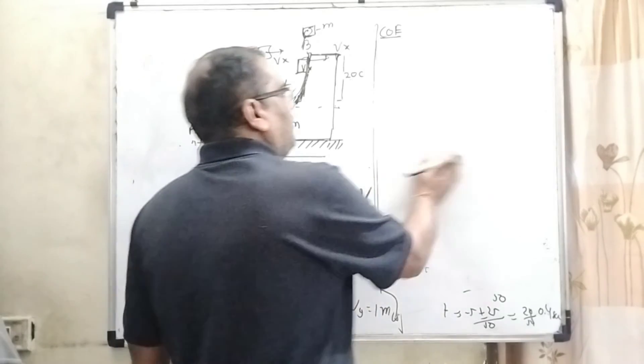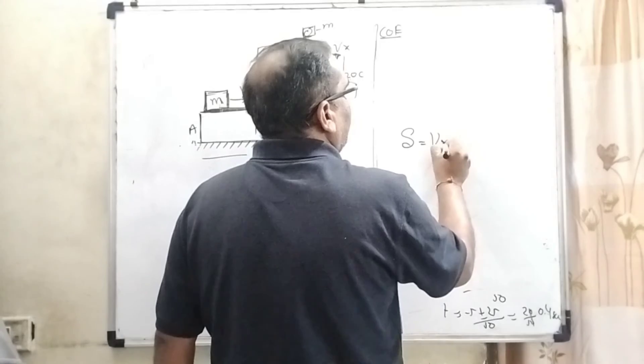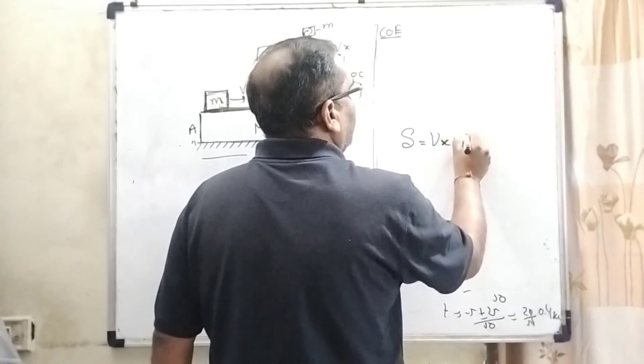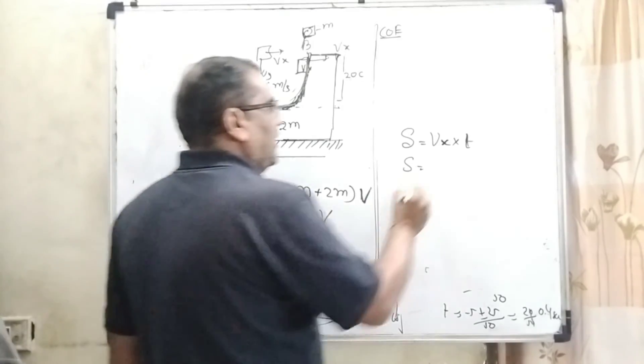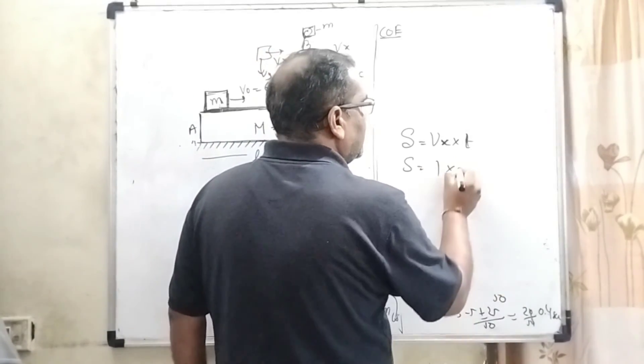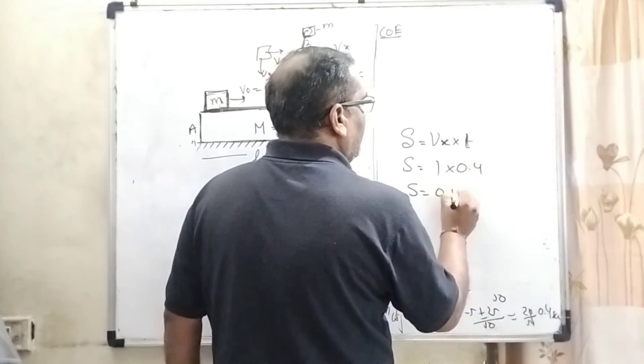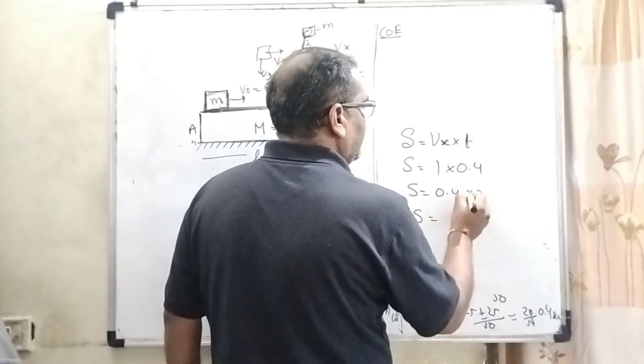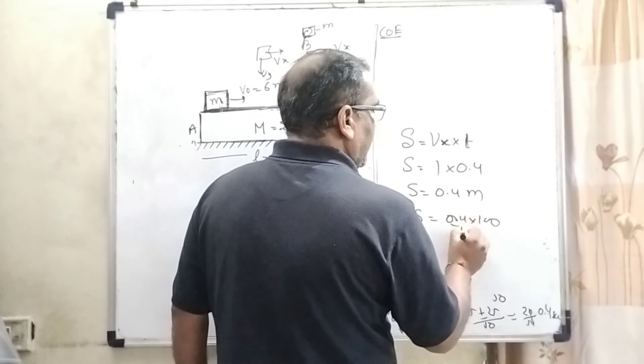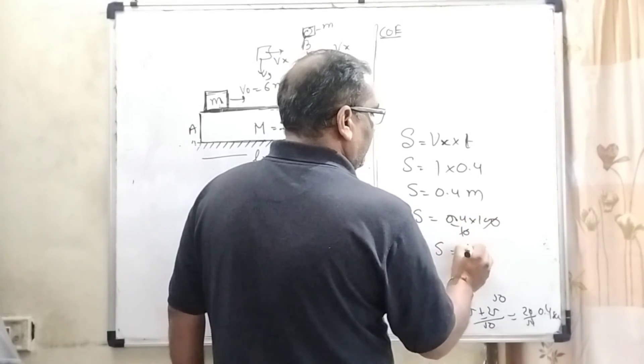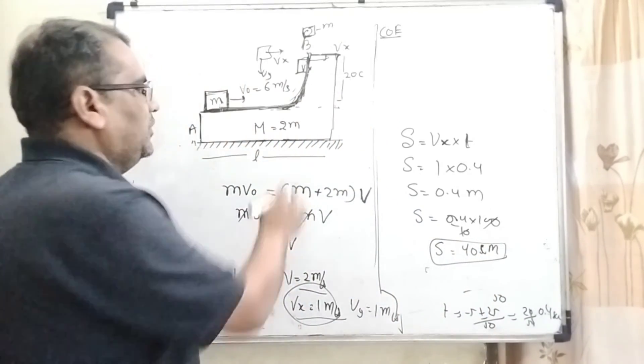As we know that the formula of range, s is equals to x component of velocity into time. So here vx we have already found out 1 meter per second and time 0.4, it is in second. So 0.4 meter and if we have to convert into centimeter means multiply by 100, then we get 40 centimeter. So its length is 40 centimeters.